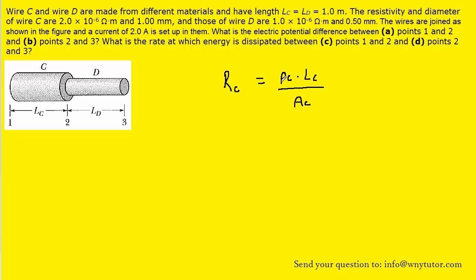The resistivity was given to us in the question as being this value right here. And the length of wire C was also given to us. We can determine the area by noting that the cross-section of wire C would be a circle.